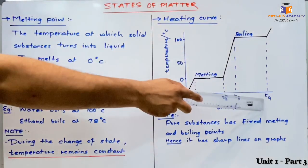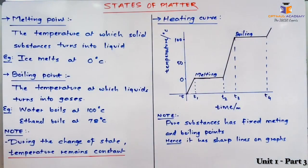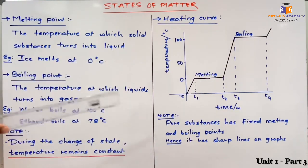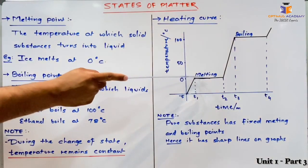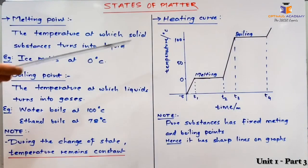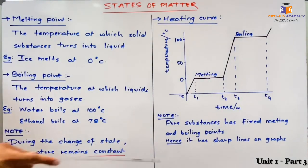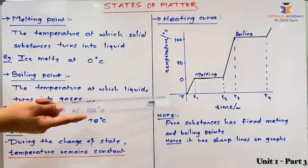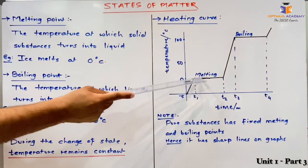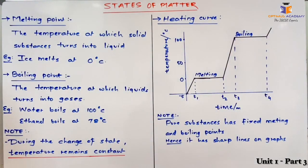After time T4, the temperature starts increasing again. The heating curve explains that substances continue to have the same temperature during a change of state. One more important point: in the graph, the lines have sharp edges at the transition points — this is the identification of pure substances, as pure substances have fixed melting and boiling points, giving sharp lines on the graph. If it were an impure substance, this edge would be a curve rather than a sharp turn. I hope you have understood what is melting point, boiling point, and the heating curve of substances.